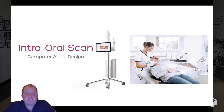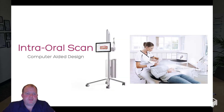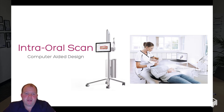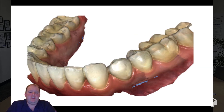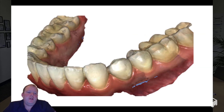Once we have that information we can take a 3D intraoral scan using a small camera — in our case it's called a 3Shape. This takes lots of small photos of your teeth and the software reconstructs these photos into a 3D digital model that we can use for planning your new teeth.